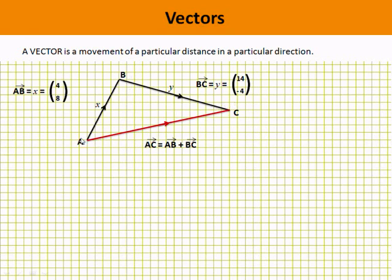AC has the same effect as AB plus BC because you start at A and end up at C. If you look at the numbers, AB is 4, 8, BC is 14, minus 4, and if you add those up you get 18, 4. In fact, 18, 4 is the direct vector that takes you from A to C, 18 across and four up.